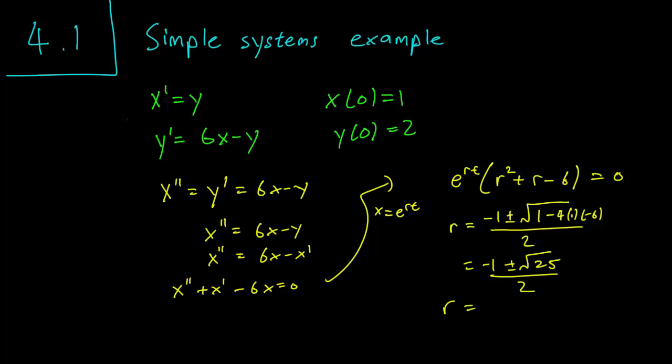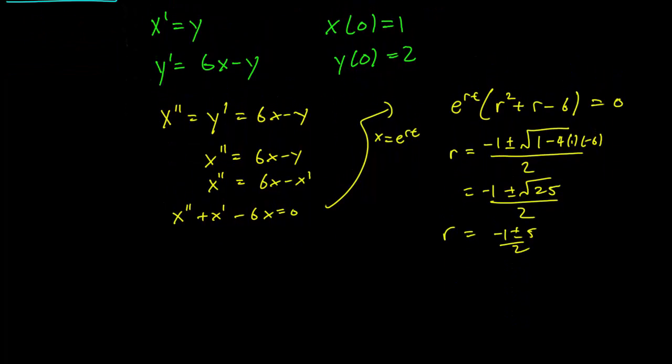And that means that r is just going to be minus 1 plus minus 5 over 2, or in other words, r is just either 2 or minus 3.